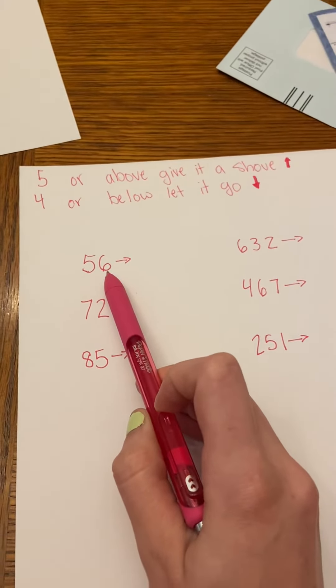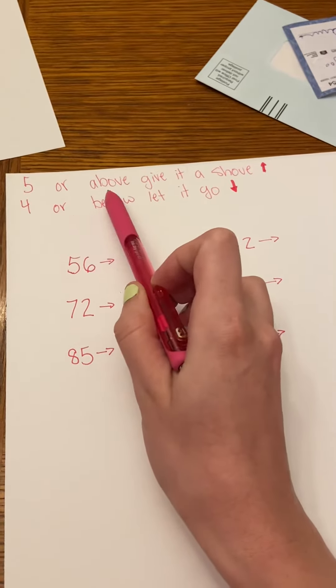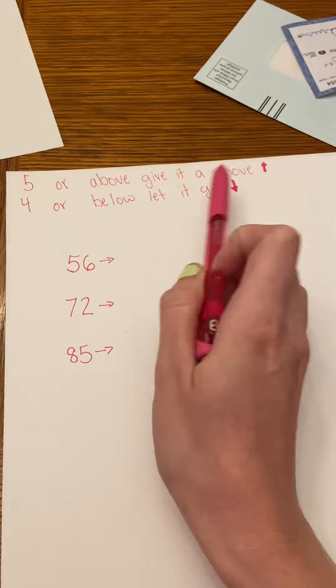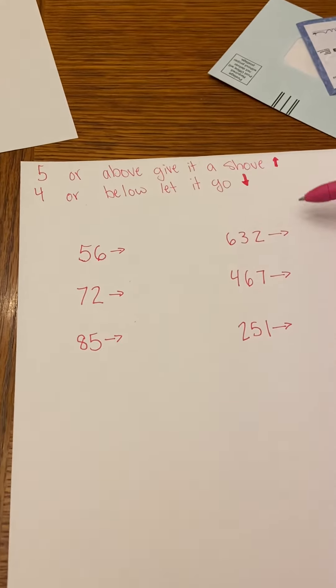So if you remember from last week, we had that little chart that says if the number is five or above, I'm gonna give it a shove up. And if it's four or below, I'm gonna let it go down.